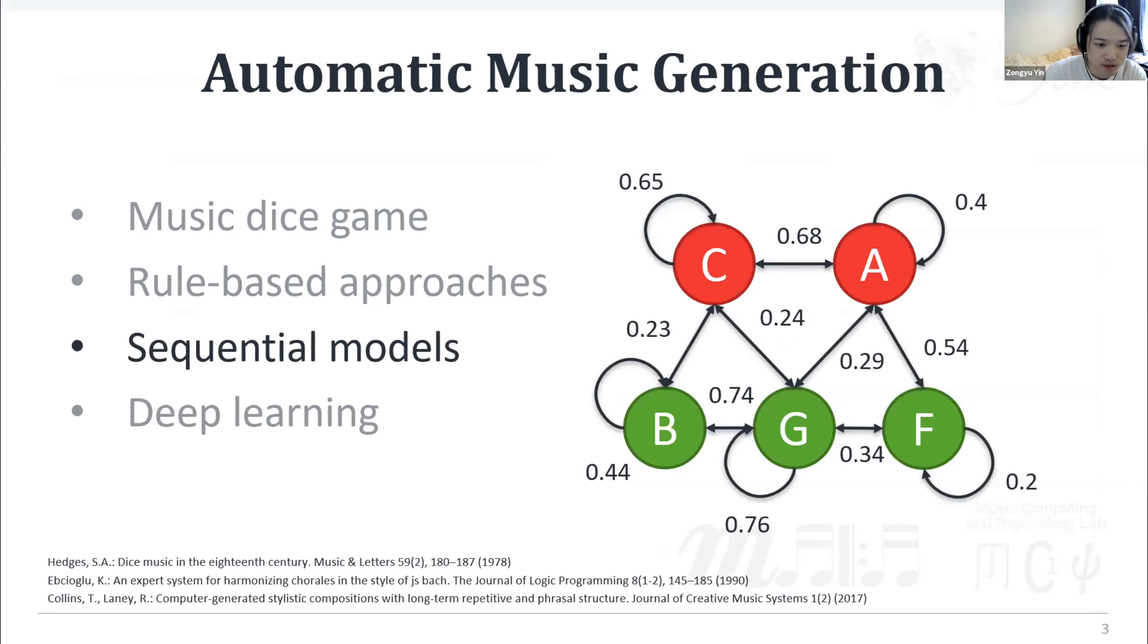Regarding more recent research, a typical example of sequential model is Markov model. It consists of state space, initial state distribution, and transition probabilities, allowing music generated by going through a series of transitions.